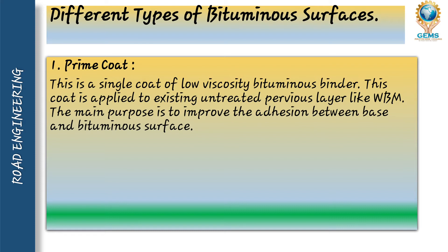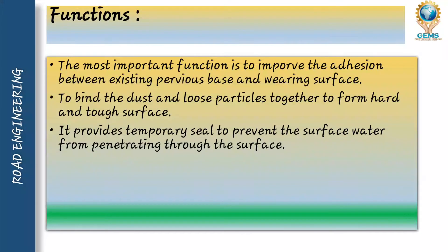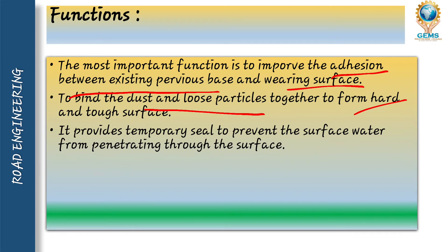The main purpose is to improve the adhesion between the base and the bituminous surface — which means the sticky property. Prime coat is a single coat which has low viscosity bitumen binder, and this coat is used in WBM road, that is water-borne macadam road. The main purpose is to improve the adhesiveness between the base course and the bituminous surface.